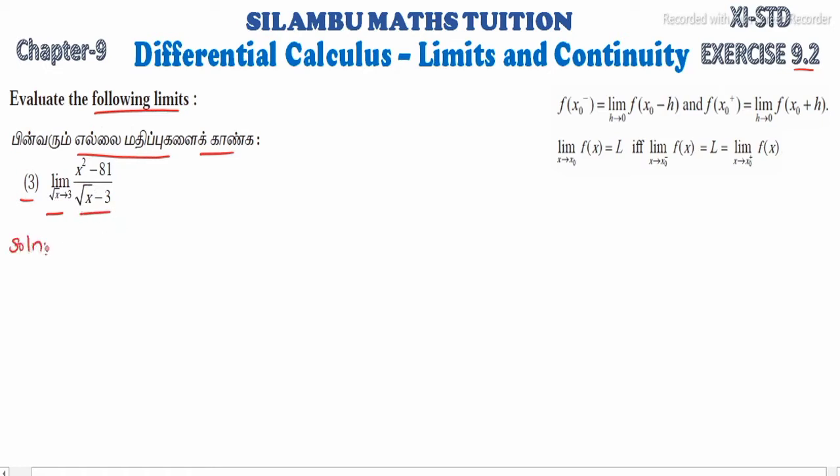So this is a similar sum that might appear in the exam. First thing we have to do is copy: Limit root x is tending to 3, x square minus 81 divided by root x minus 3. Root x is tending to 3. We can substitute. Let's define root x as capital Y. Capital Y is equal to root x.